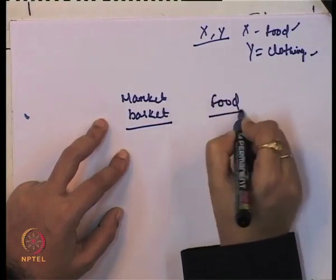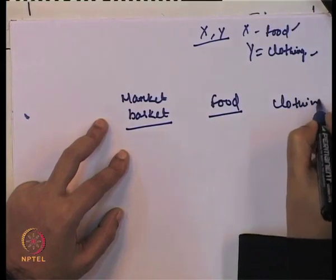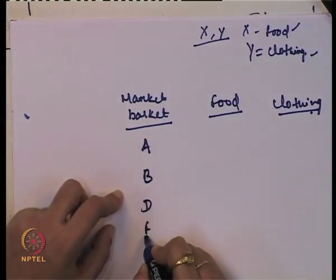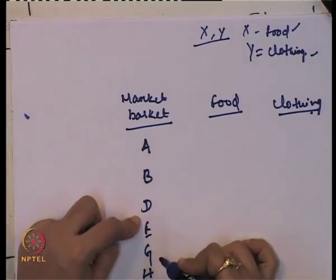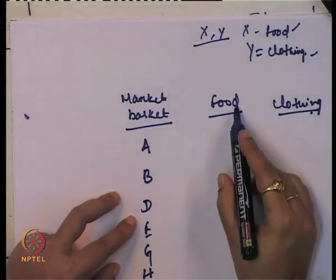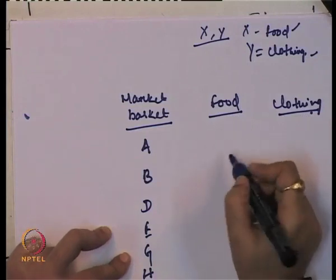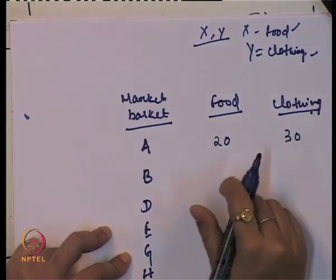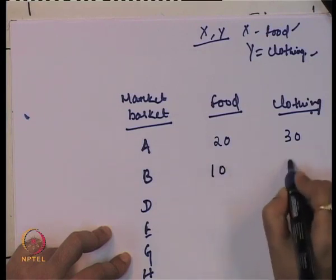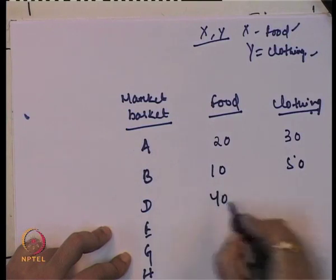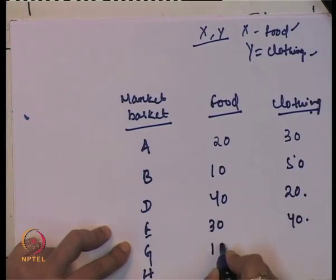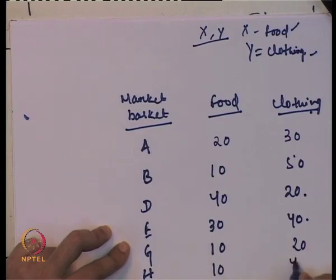Consider a market basket or consumption basket with two goods: food and clothing. The baskets are labeled A, B, D, E, G, and H — these are different consumption baskets consisting of different combinations of food and clothing. Combination A has 20 units of food and 30 units of clothing. B has 10 units of food and 50 units of clothing. D has 40 units of food and 20 units of clothing. G has 10 units of food and 20 units of clothing. H has 10 units of food and 40 units of clothing.